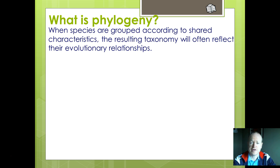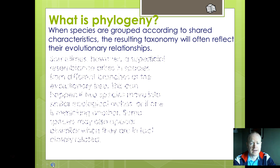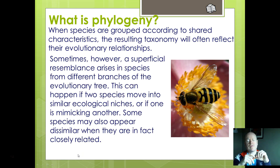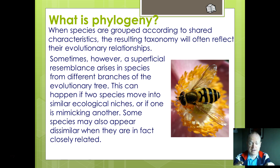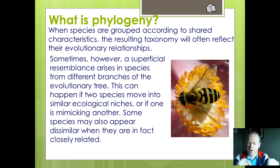A lot of the classification that was done up until the end of the 19th century was all about external features — looking at what something looked like. But that causes some problems, because if you've got species which have evolved a particular characteristic, they might actually look similar despite not being related to each other. A classic example is wasps and hoverflies — they both have yellow and brown stripes, but they are in no way evolutionarily related to each other.